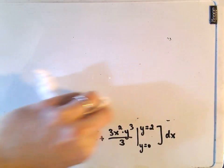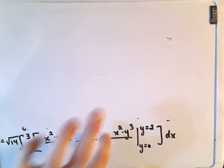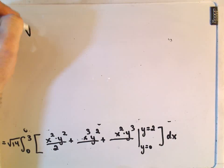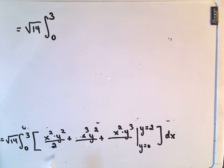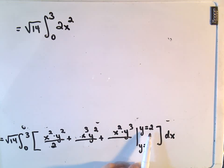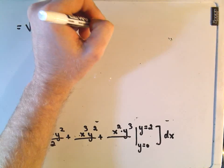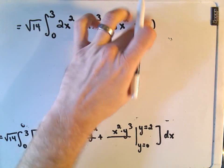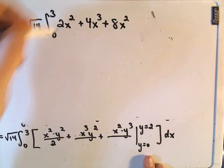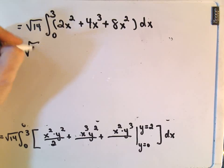Hopefully we can compute this without too much trouble. At least the lower limits are 0, so that'll make life easier. We can cancel out the 2s and the 3s. We're left with √14 times the integral from 0 to 3. If we plug in y = 2, we get 2x², then 4x³, and 8x². The lower limits would simply be zeros, so I'll leave that off, and we'll integrate with respect to x.